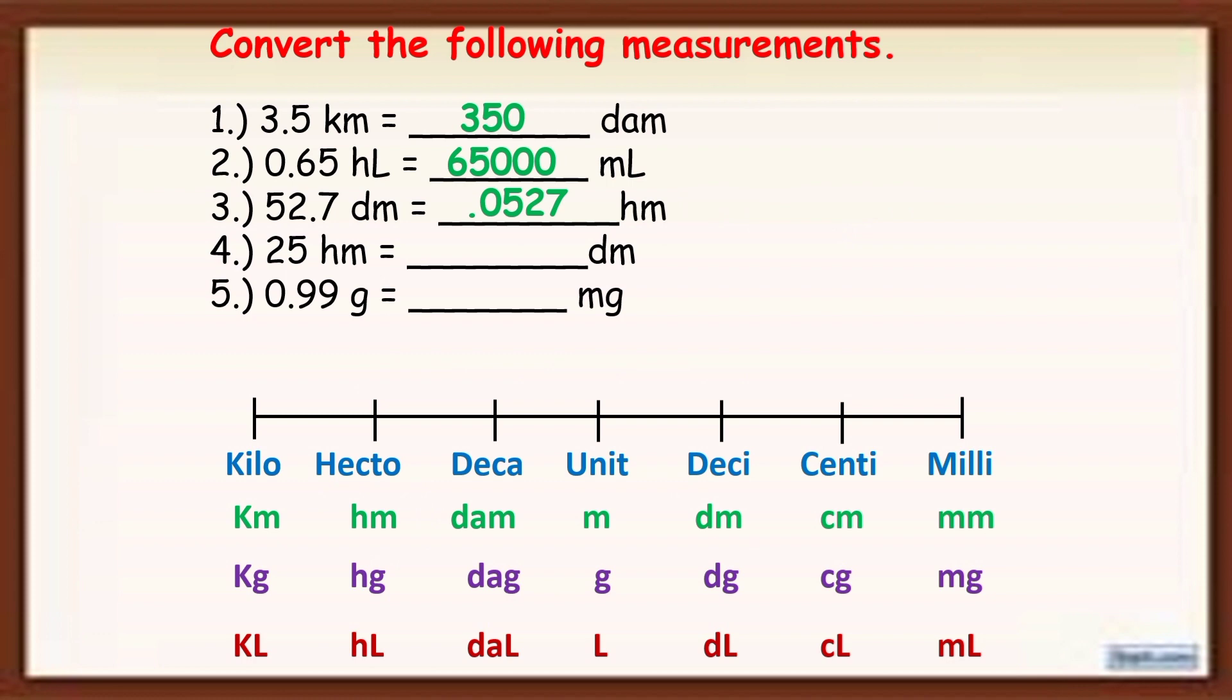Next example, number 4. 25 HM to DM. Now, count the number of units. So 1, 2, 3. So there are 3 units. So in 25, wala kang nakikitang decimal point, diba? Tandaan, na kapag wala kang nakikitang decimal point, makikita ito sa dulo. So after yun ang 5. Now, we count 3 units from 5 syempre. So 1, 2, 3. Then add 0s doon sa missing place value. Therefore, the answer is 25,000.